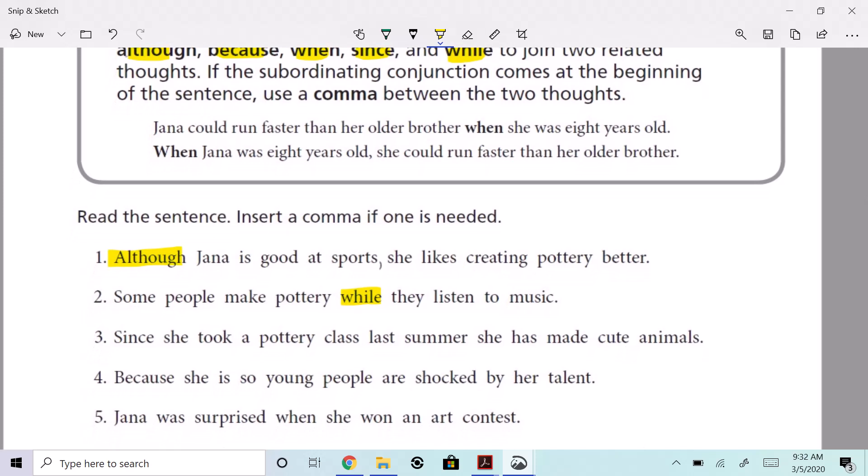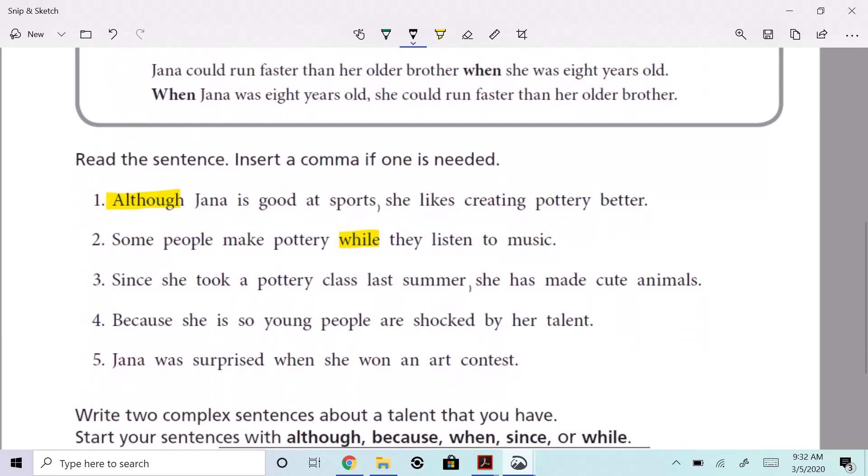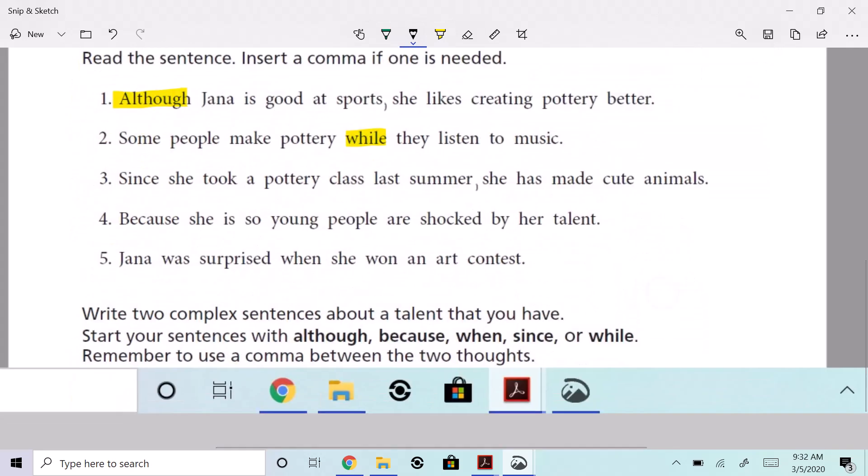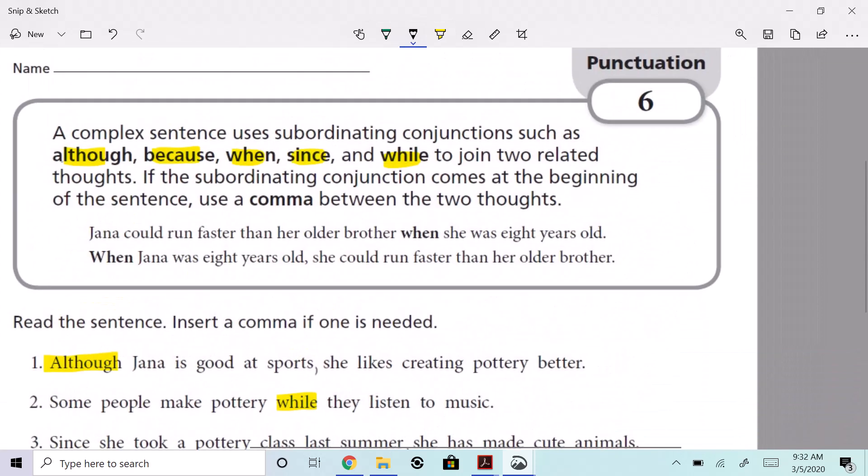But when you have that subordinating conjunction at the beginning, you're going to need it, because what you end up doing is creating a dependent clause. It's dependent on something else. Since she took a pottery class last summer—yes, thank you, who said that?—comma, she has made cute animals. Are you seeing this? Here's another one. I'll have you do four and five on your own. Okay? I think you can handle it.